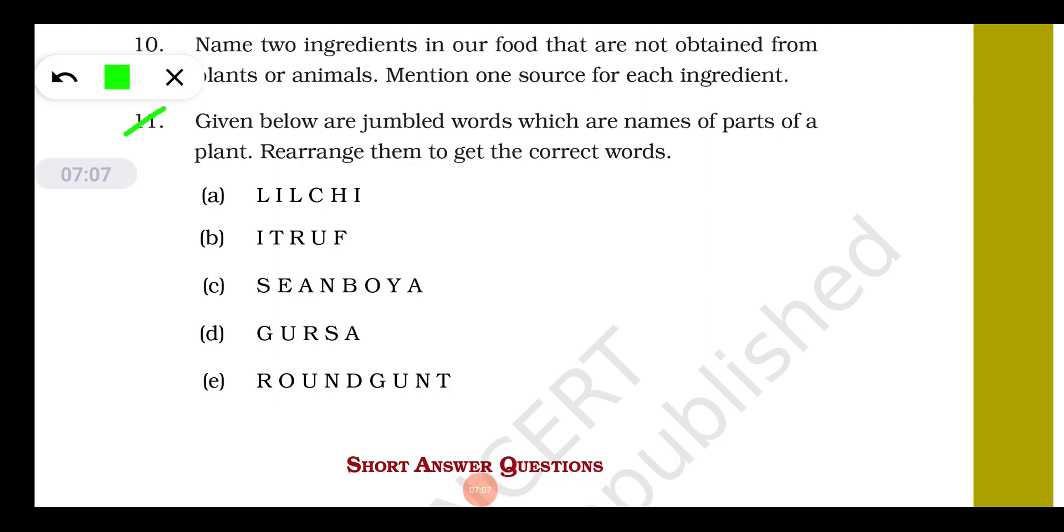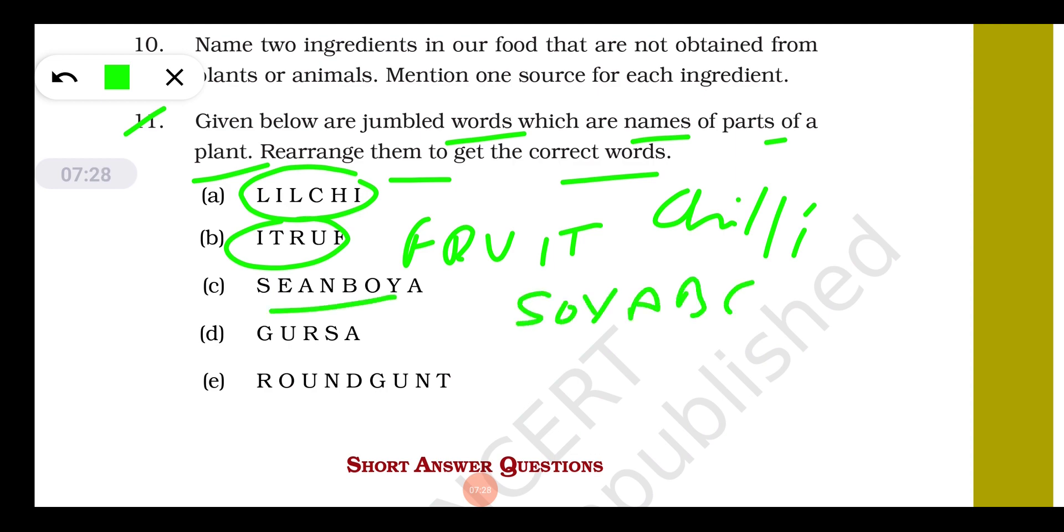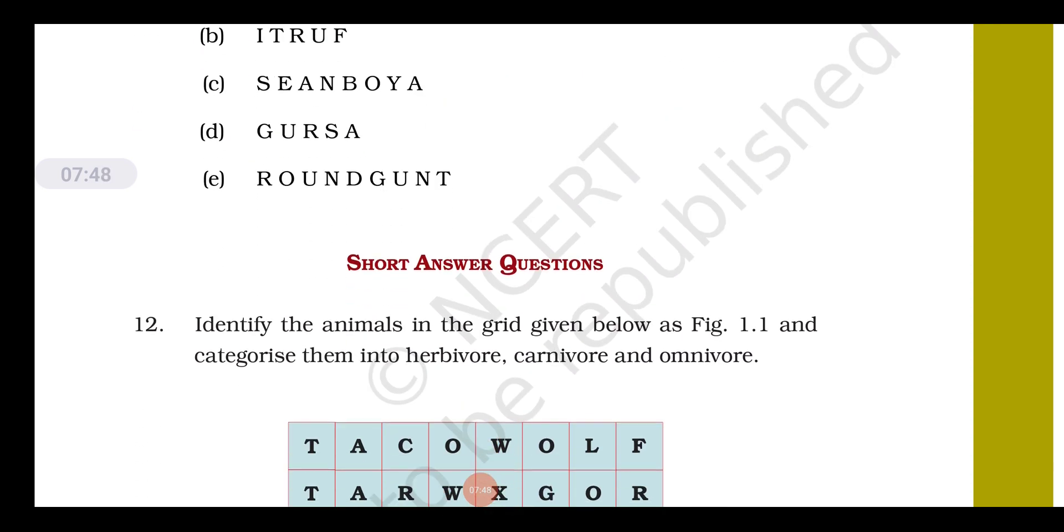Question number eleven: given below are the jumbled words which are names of parts of a plant. Rearrange them to get the correct words. Number one, if you rearrange it you will find C-H-I-L-L-I, chili. This is F-R-U-I-T, fruit. This is S-O-Y-A-B-E-A-N, soybean. This one is G-U-R-S-A, oh S-U-G-A-R, sugar I got you. This is groundnut, clearly visible G-R-O-U-N-D-N-U-T, groundnut.